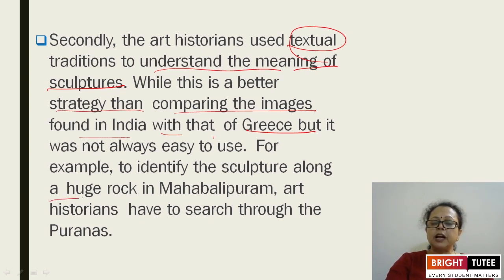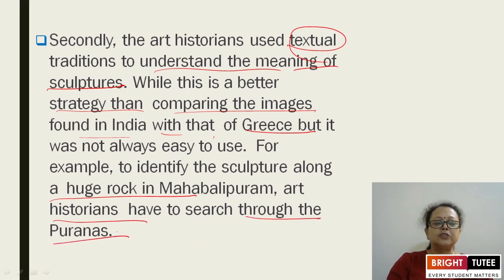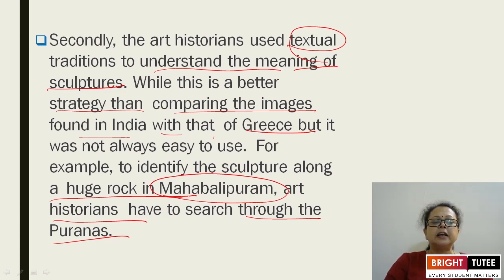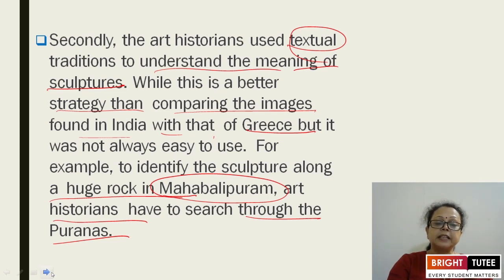For example, to identify sculptures along a huge rock in Mahabalipuram in Tamil Nadu, art historians had to search through the Puranas. The huge stones were cut and given different shapes and images of different temples. The theme of the Mahabalipuram temples is written in the Puranas, and according to that Puranic tradition, the Mahabalipuram temples were constructed.